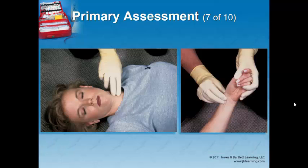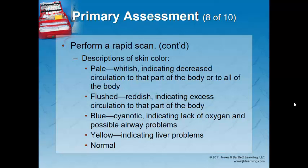If there are any problems with airway, breathing, circulation, or level of consciousness — they're a priority patient, especially if you can't fix it. Skin assessment: pale means decreased blood flow to that area. Flushed or very red may indicate excess circulation from hypertension, high blood pressure, heat exposure, or chemical exposure. Blue means cyanosis — this is different from pale. With pale, there's decreased blood in that area; with blue, there's enough blood but it's lacking oxygen — we call that cyanosis. If it's yellow, that's a liver problem — jaundice. Or it could be normal for them. It's always good to ask a family member: is this their normal color?